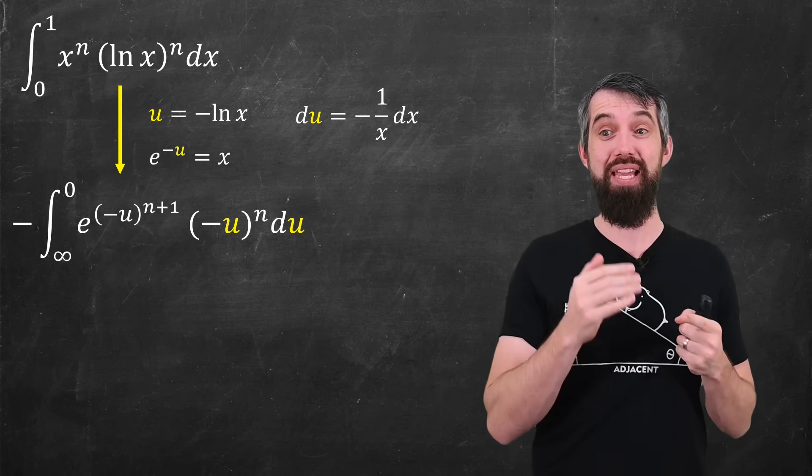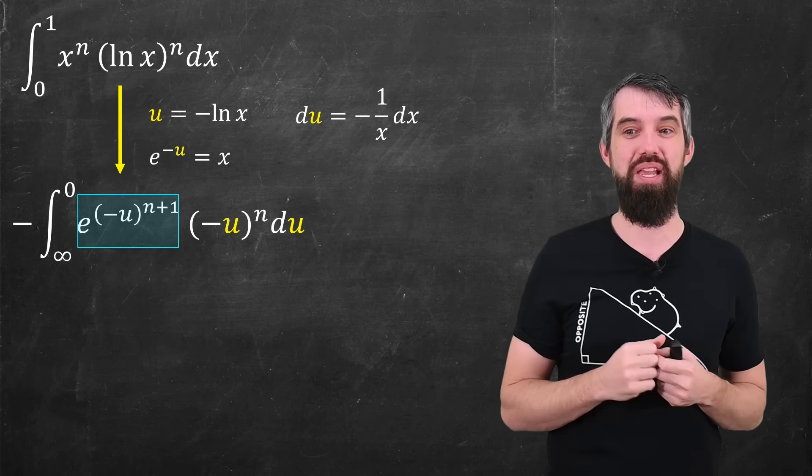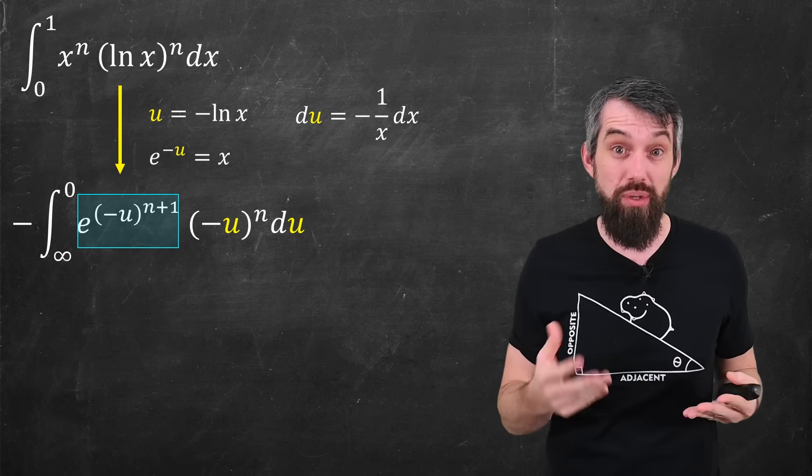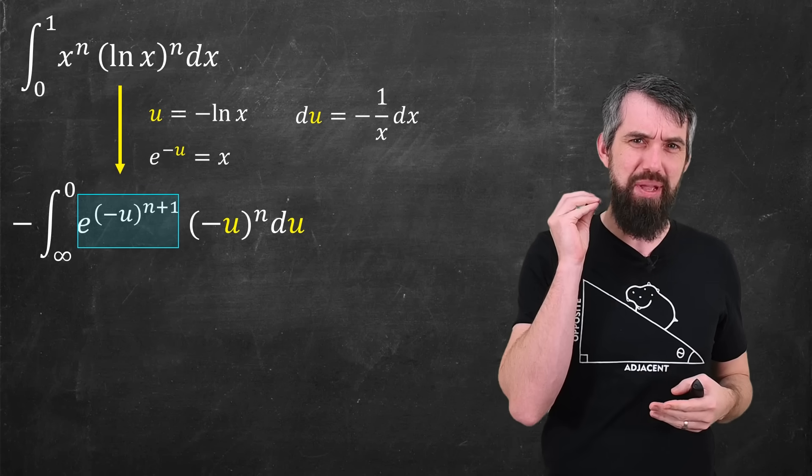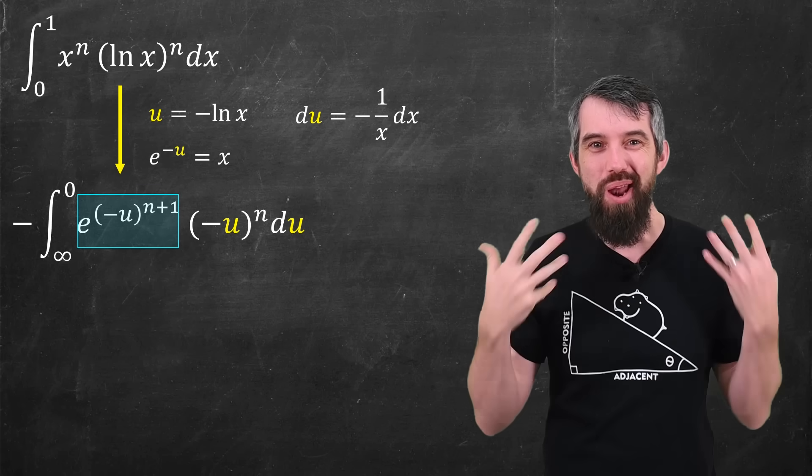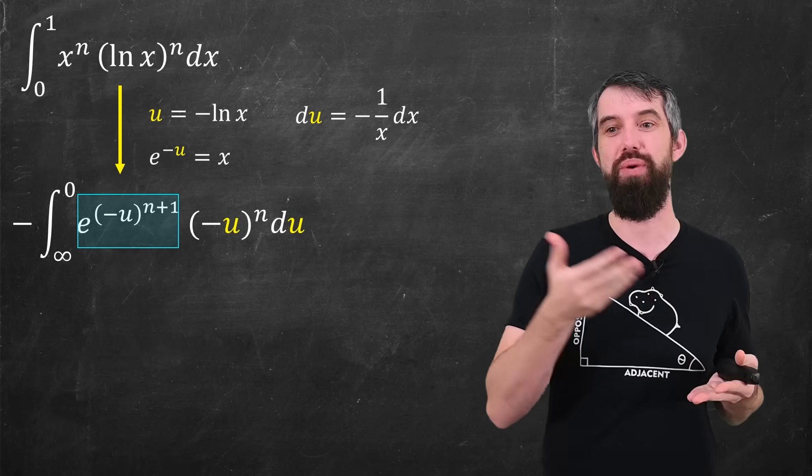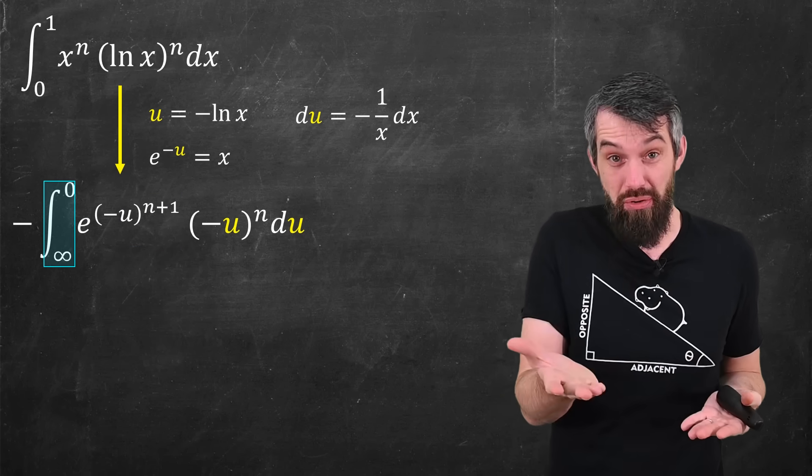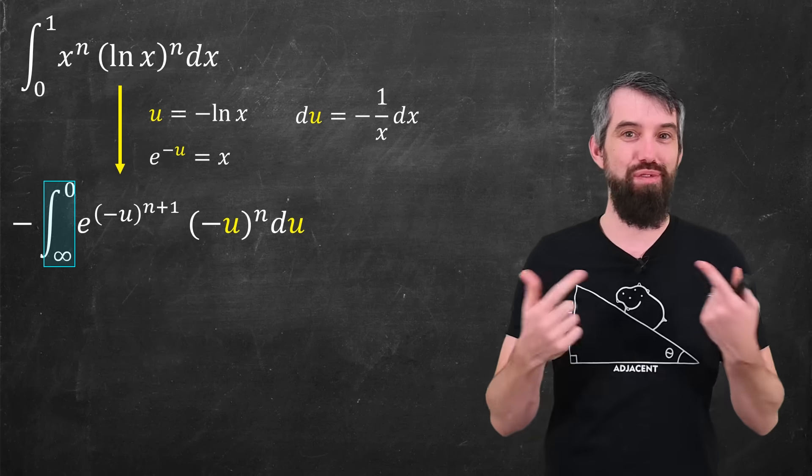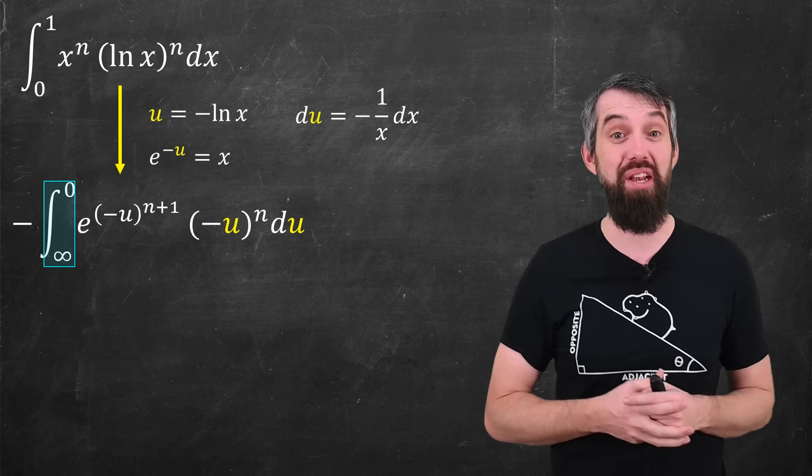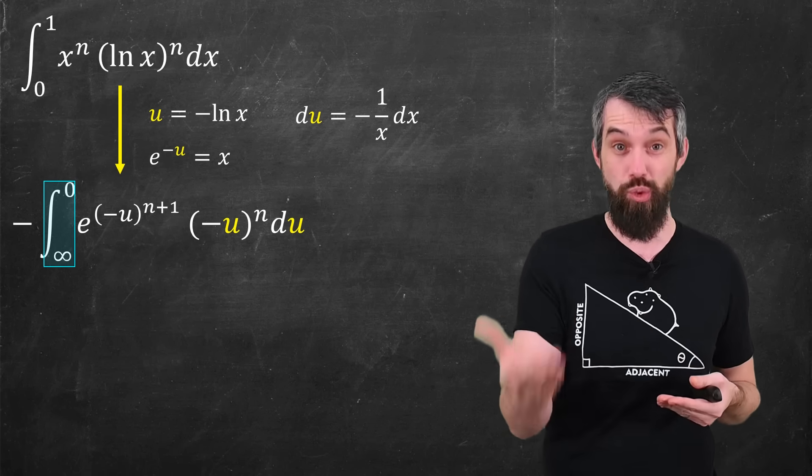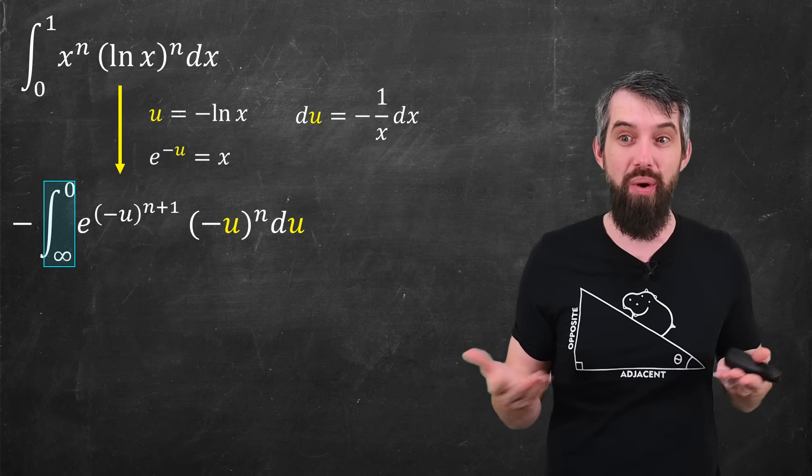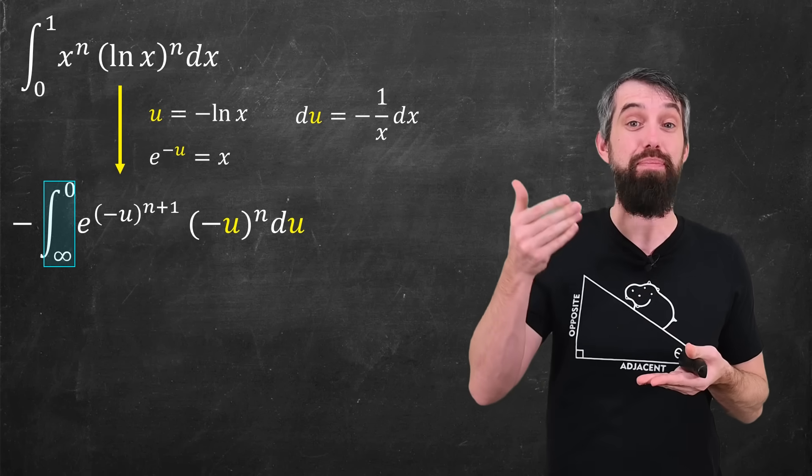Plugging all these facts in, I get this, the x to the n has become an e to the minus u to the n, and actually it's become n plus 1, because you get one more x from the conversion between du and dx. I can also think about my limits of integration. As x goes to 0 from the right, negative logarithm goes to infinity, that's why there's an infinity on the bottom. Similarly, when x is 1, the logarithm is just 0, so this is the integral from infinity up to 0.